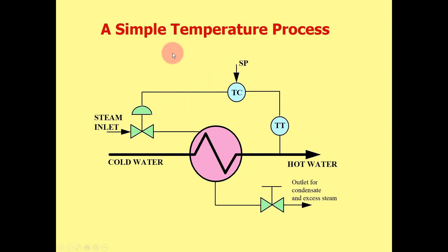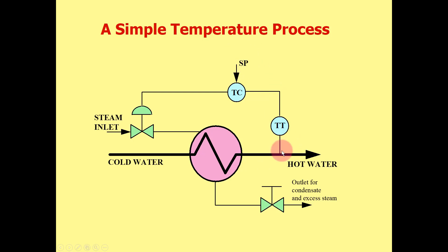This picture shows a very simple temperature process. The purpose of this process is to get hot water at a certain temperature. If the set point for the temperature controller is 50 degrees Celsius, the temperature controller compares this set point of 50 degrees to the process variable fed back from the measurement device. An input error of 10 degrees Celsius will be fed back to the controller.